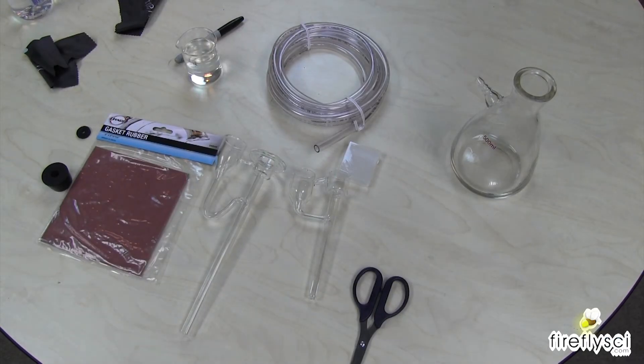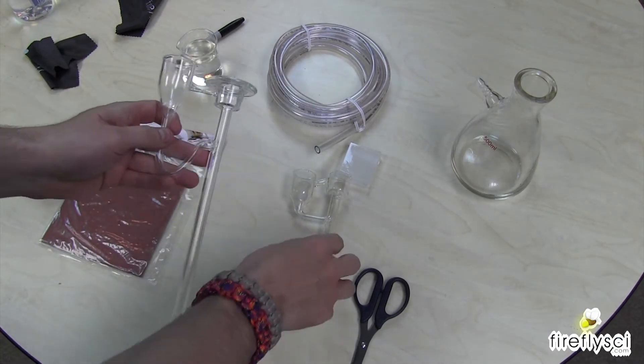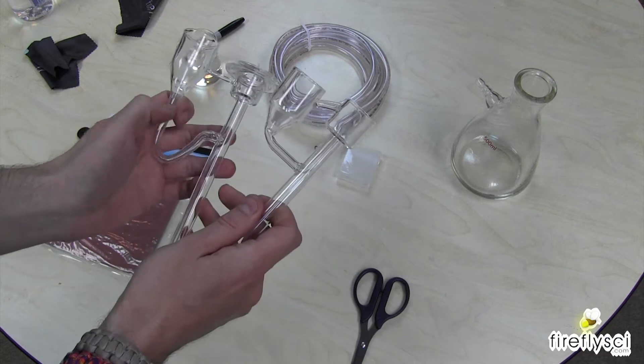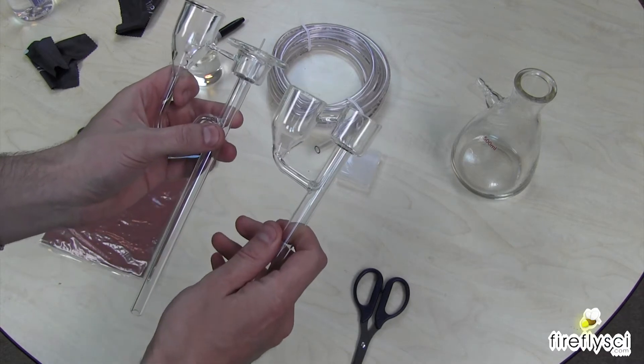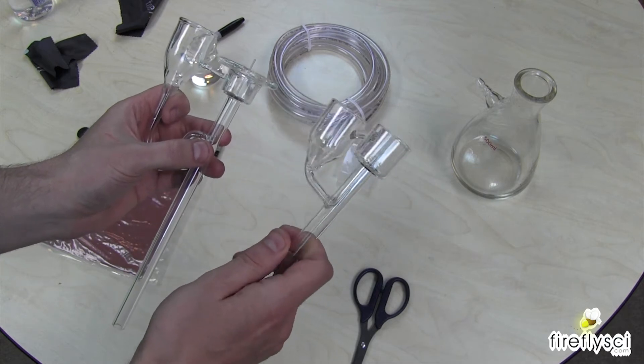Alright, so here we are. The first thing I want to do is set up the new cuvette washer here. And I brought out an old one as well, so we can compare the two. We're essentially making, this is the one that currently washes 10 millimeter cuvettes.